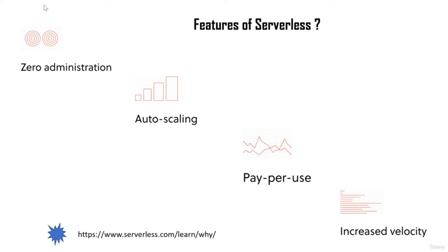The second key feature is auto scaling. Auto scaling makes it possible for you to ramp up your infrastructure as per needs. As your application keeps growing in size, the serverless application will auto scale and use extra resources or infrastructure to make sure your application is running properly. The third important feature is pay as you use — you only pay for the resources you have used, making it quite cost efficient.